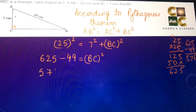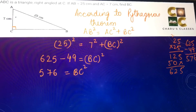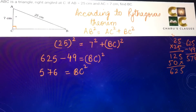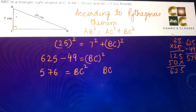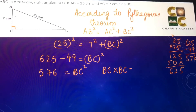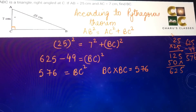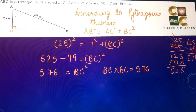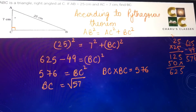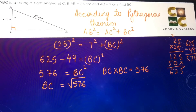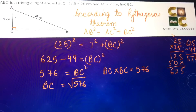625 minus 49 comes to 576, so BC square is 576. This means BC into BC is 576, or we can say BC is equal to the square root of 576. We will now make factors of 576.